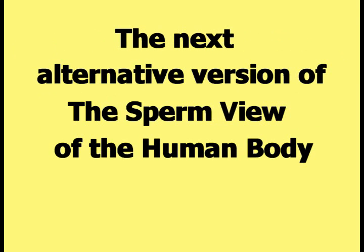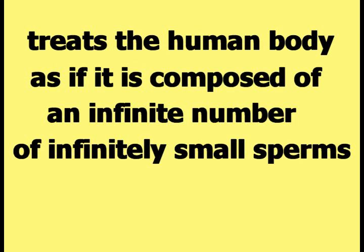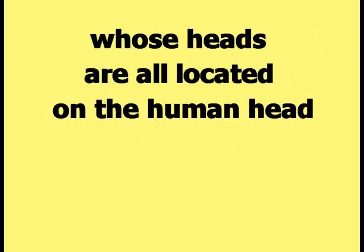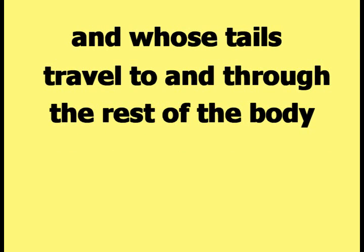The next alternative version treats the human body as if it is composed of an infinite number of infinitely small sperms, whose heads are all located on the human head and whose tails travel through the rest of the body, as demonstrated in a picture using just a few sperms for clarity.